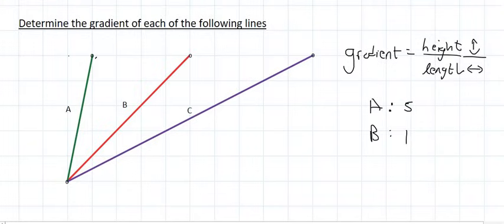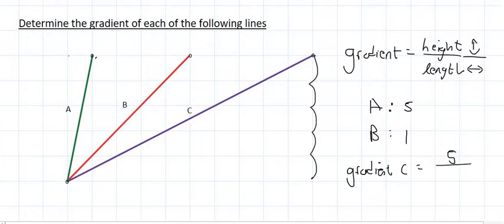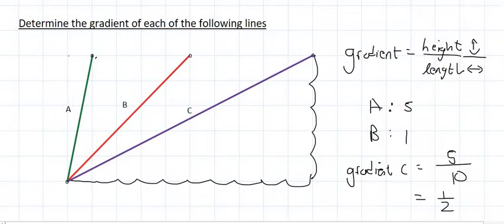Now we need to look at C. The height is 5 as well. And the length is 10. And 5 divided by 10 is a half. So the gradient of A is 5, the gradient of B is 1, and the gradient of C is a half.